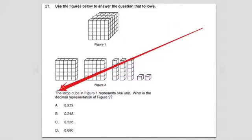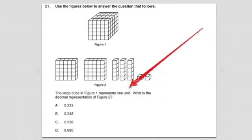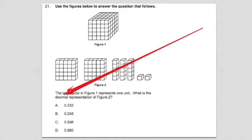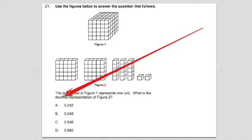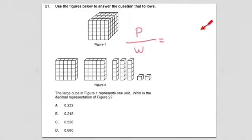I'm going to start with this sentence here. The large cube in figure 1 represents one unit. We could think of one unit as a whole or 100%. What is the decimal representation of figure 2? Decimal representation, what is the percent, what is the fraction? These are all part to whole relationships, another way of expressing a part to whole relationship. Alright, so I know I'm going to be thinking in terms of part to whole, and sometimes it's helpful when you think in terms of part to whole, just to really quickly identify what's your part and what's your whole.